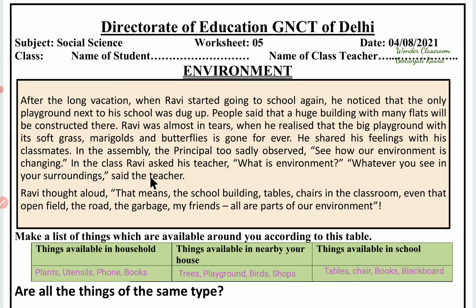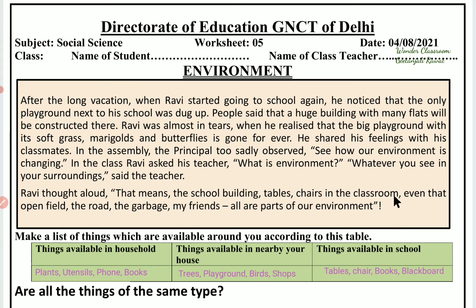In the class, Ravi asked his teacher, and if you look at yourself, it is an environment. Ravi thought aloud: 'That means the school building, table, chairs in the classroom, even that open field, the road, the garbage, my friends — all are part of the environment.'